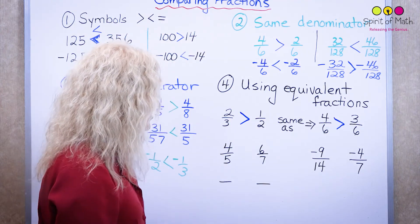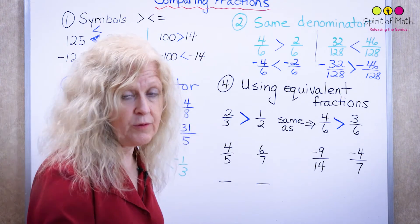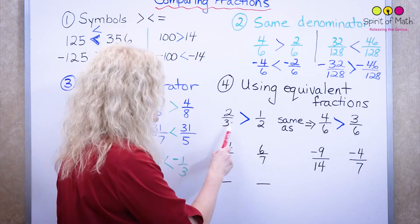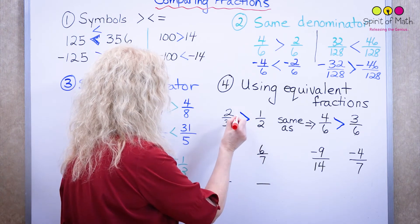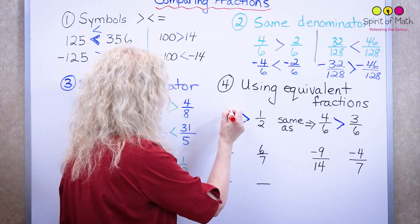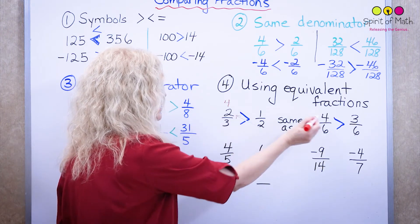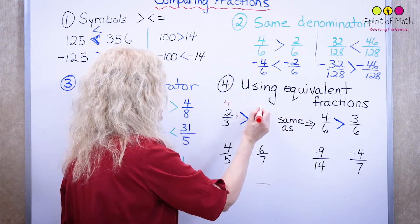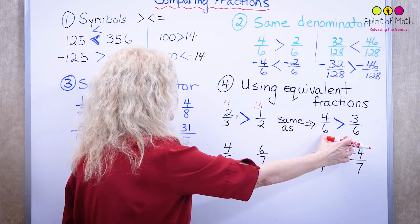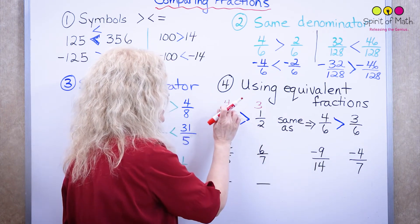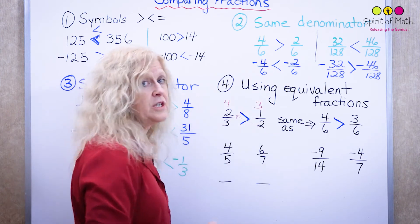There's a faster way to think about this. You can cross-multiply: multiply the numerator of one fraction by the denominator of the other. Two times two is four, and three times one is three. Four is larger than three, so two-thirds is larger than one-half. This is really about equivalent fractions — cross-multiplying is a shortcut to find which numerator would be larger.